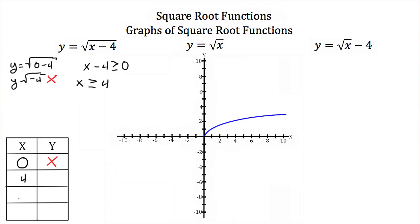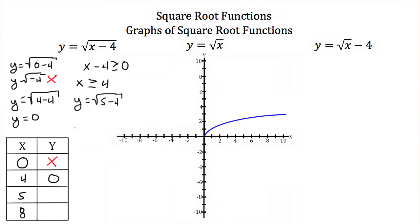So I'll pick x values of 4, 5, and 8 since they'll be easy to solve. Plugging in 4: y equals the square root of 4 minus 4, which is 0. Plugging in 5: y equals the square root of 5 minus 4, which is the square root of 1, or 1. Plugging in 8: y equals the square root of 8 minus 4, and the square root of 4 is 2. Plotting (4,0), (5,1), and (8,2) and connecting with a smooth curve gives us the graph.